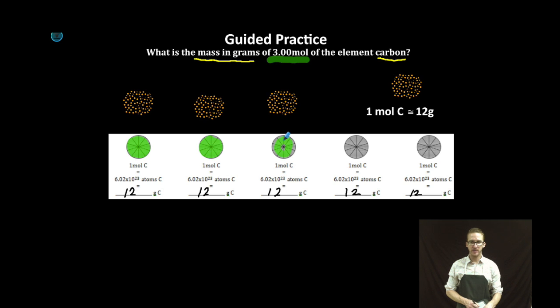And I'm going to shade in 3 of these little pie charts to indicate that I've got 3 moles of carbon. If each mole is 12 grams, then the mass of 3 moles of the element carbon is going to be 36 grams. Now, I know I'm a genius, but how is that going to work using dimensional analysis?